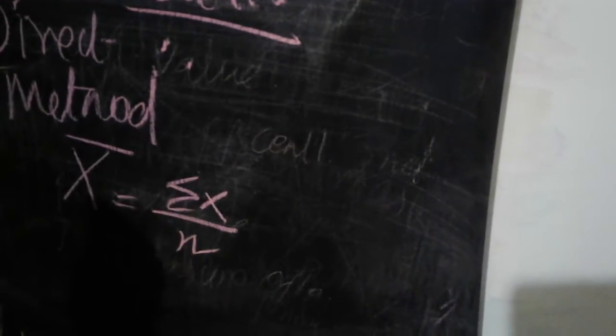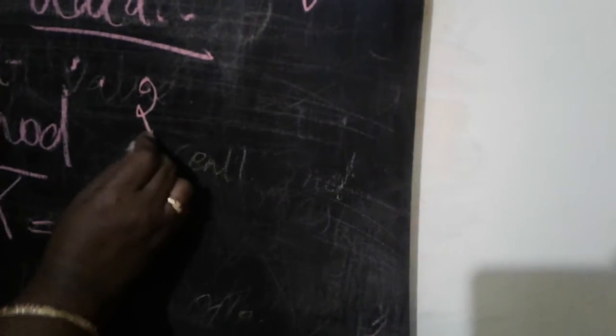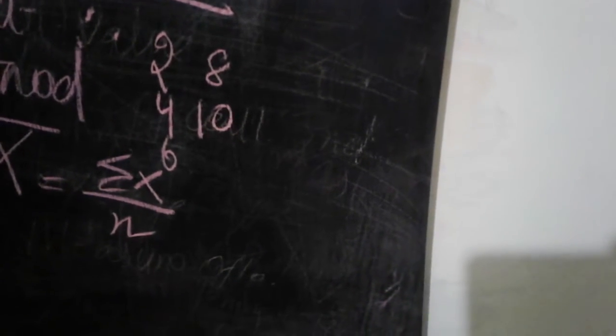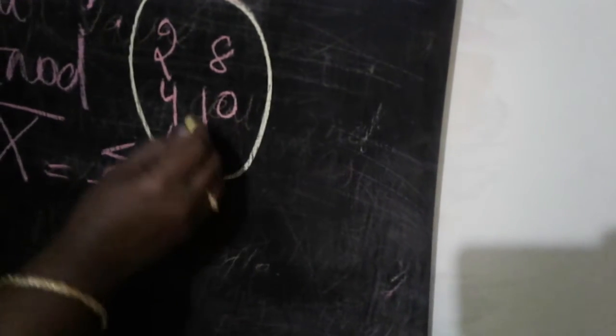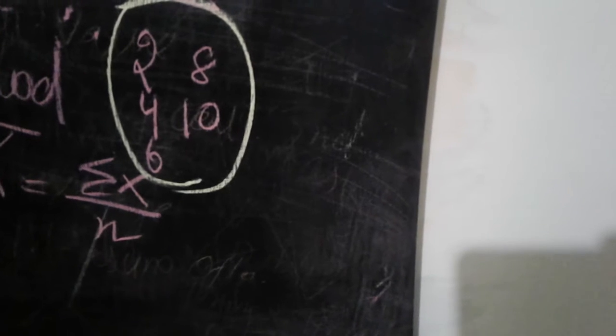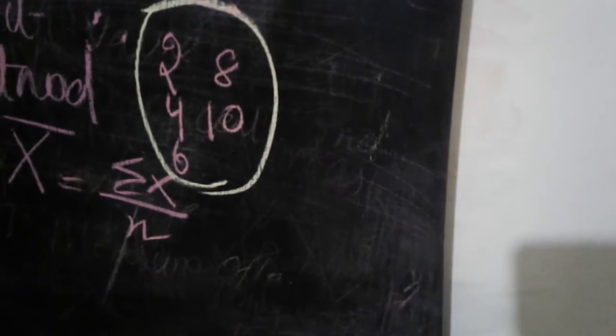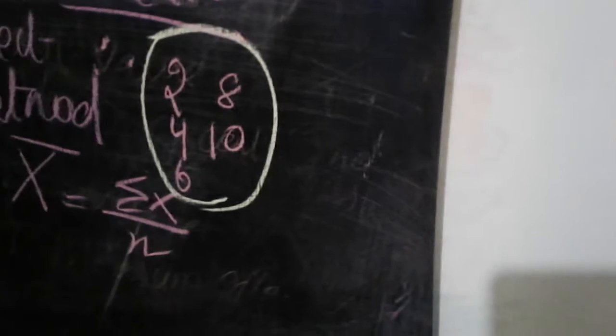The numbers given in the question are two, four, six, eight, and ten. For these values, we are going to calculate the mean using the direct method.